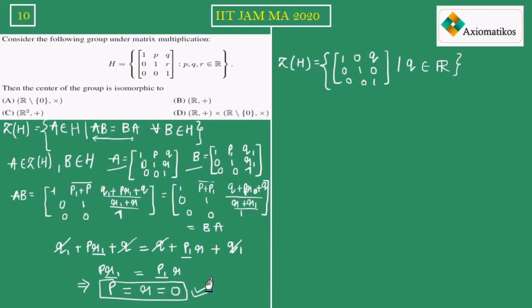Now I will show that Z(H) is isomorphic to ℝ. In order to show this we need to find an isomorphism. Let Φ be an isomorphism from Z(H) to ℝ. The operation in Z(H) is matrix multiplication and on the right-hand side it is addition.